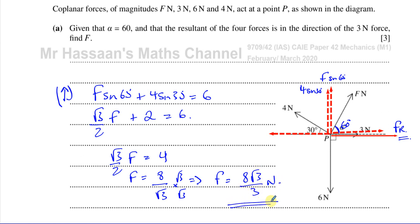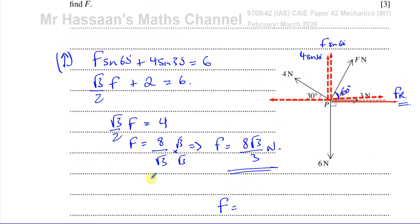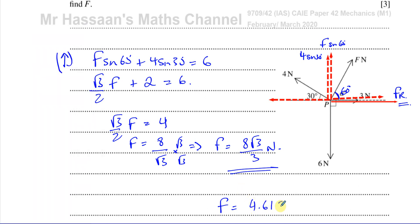You can leave your answer in exact form as eight root three over three Newtons if the question asks for an exact value. Otherwise, it's safer to write it as a decimal. Eight over root three gives four point six one eight eight Newtons, so F is equal to four point six two Newtons to three significant figures.